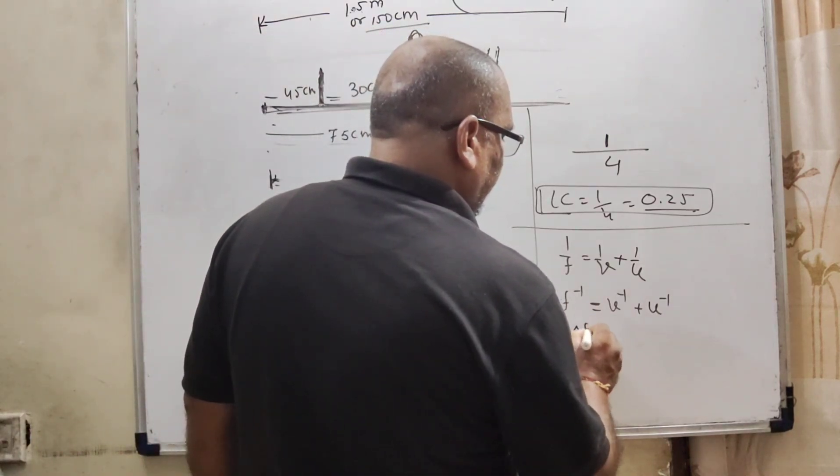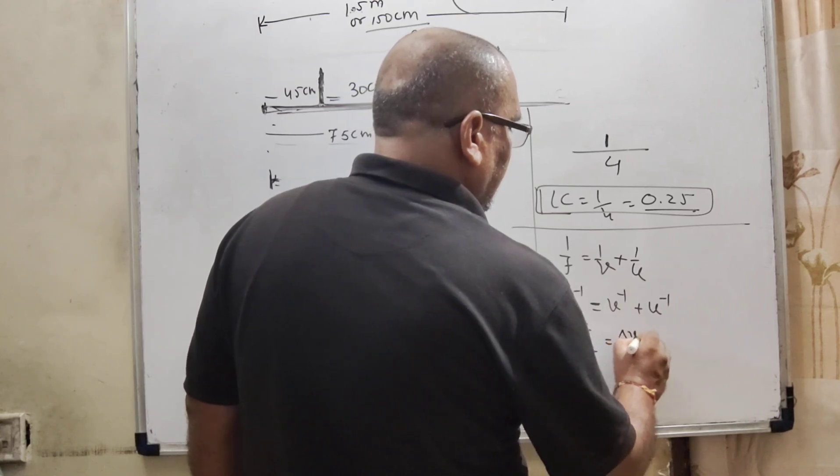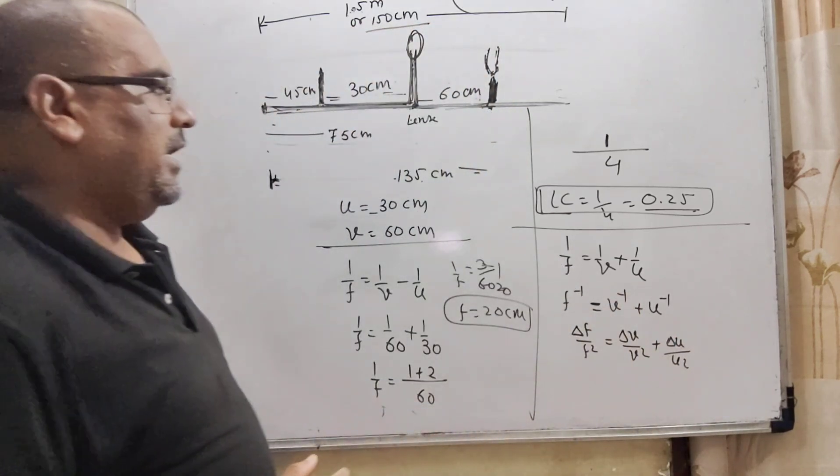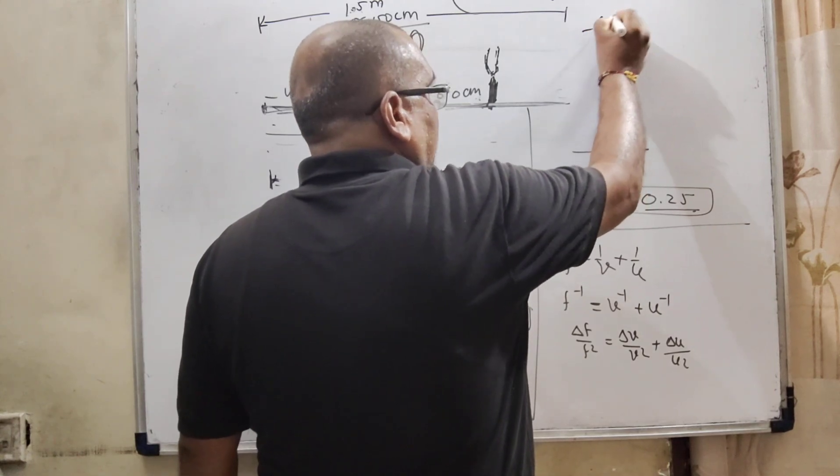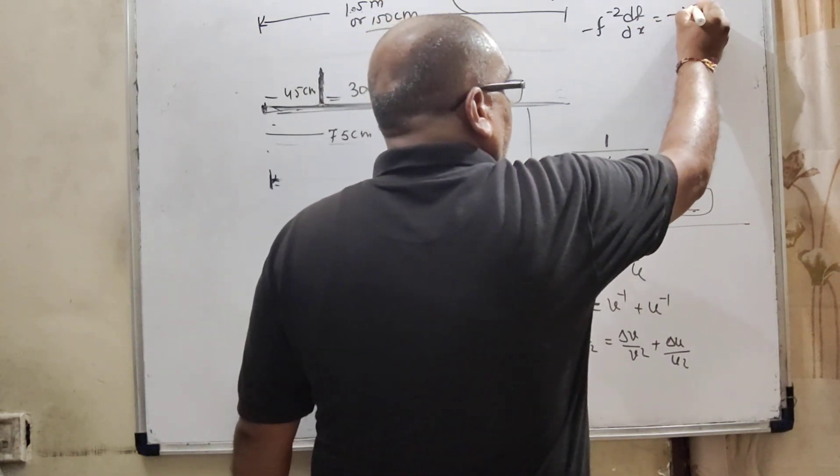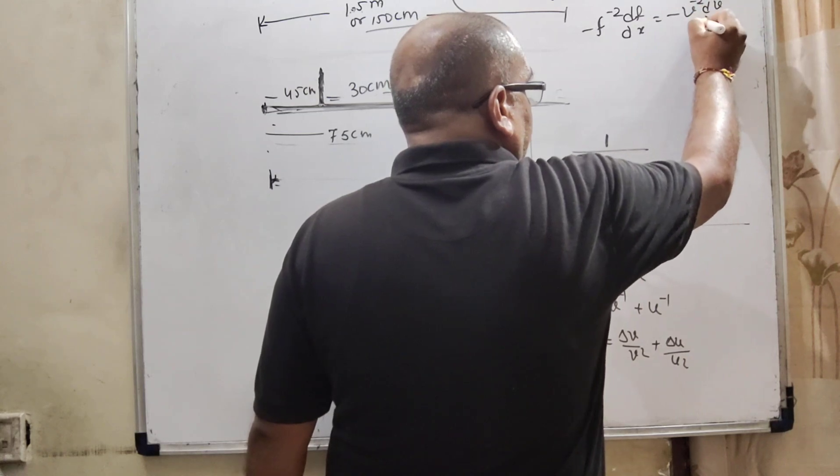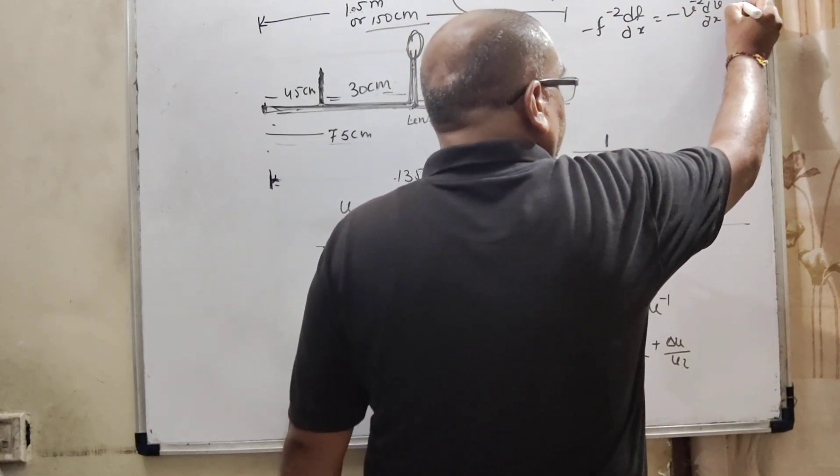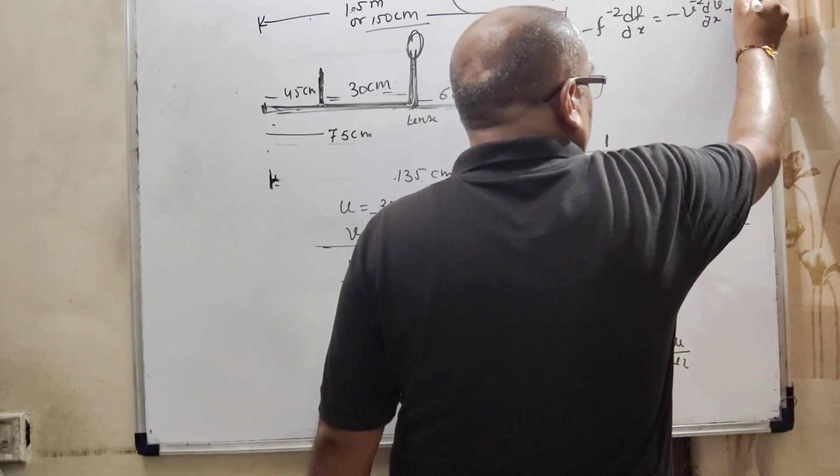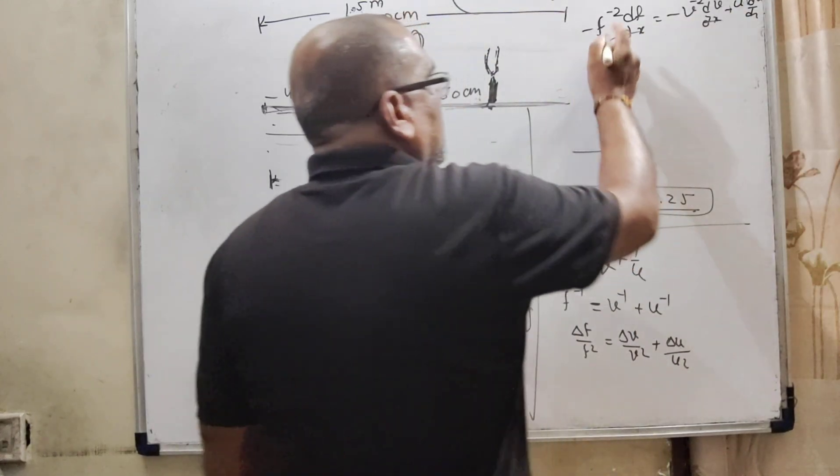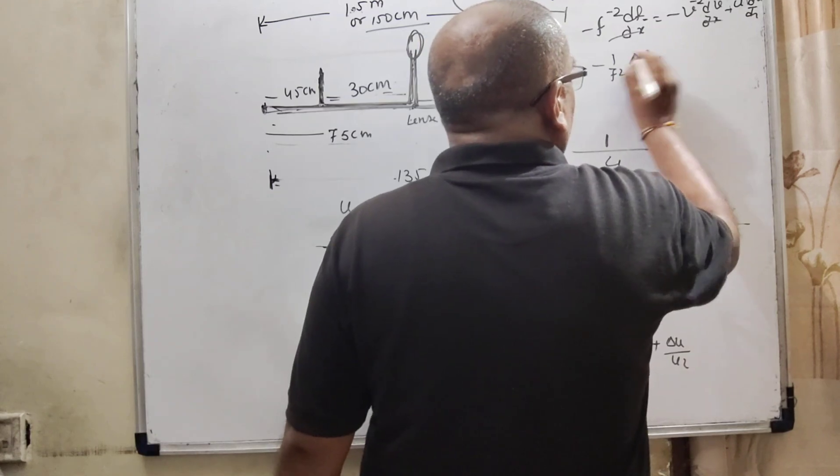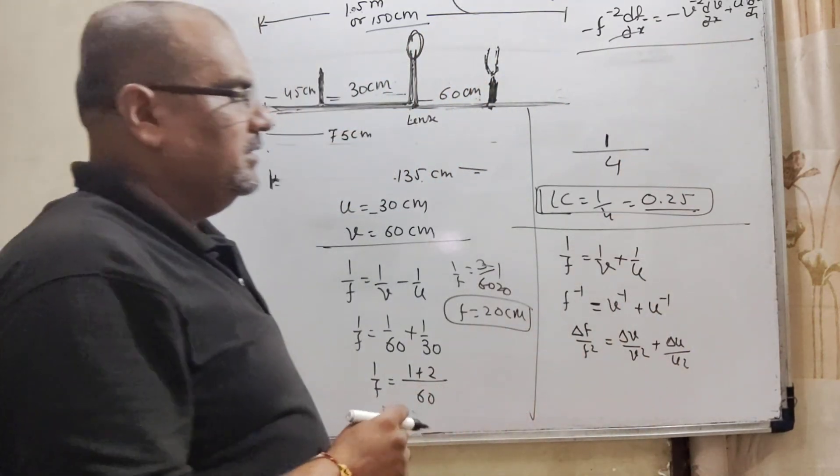So, it can be written as delta f upon f square. Here, delta v upon v square plus delta u upon u square. Actually, here, minus f can be written as minus f raised to power minus 2. df by dx is equal to minus v raised to power minus 2 dv by dx, and here minus du minus u square upon du upon dx. All this formula, this type of formula we are using, we get this result.